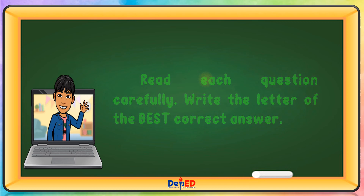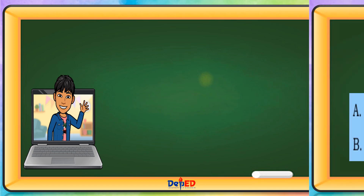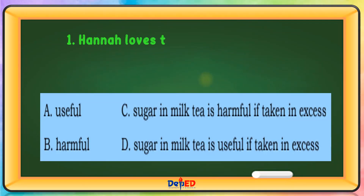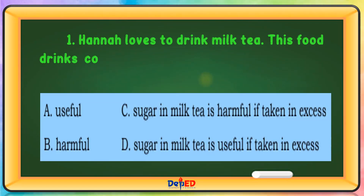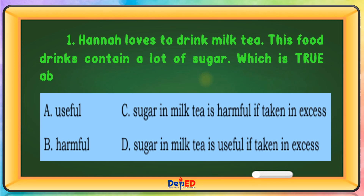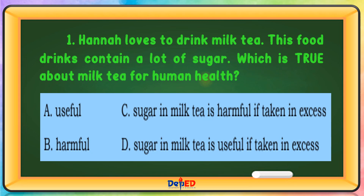Hanna loves to drink milk tea. These food drinks contain a lot of sugar. Which is true about milk tea for human health? The answer is Letter C: Sugar in milk tea is harmful if taken in excess.